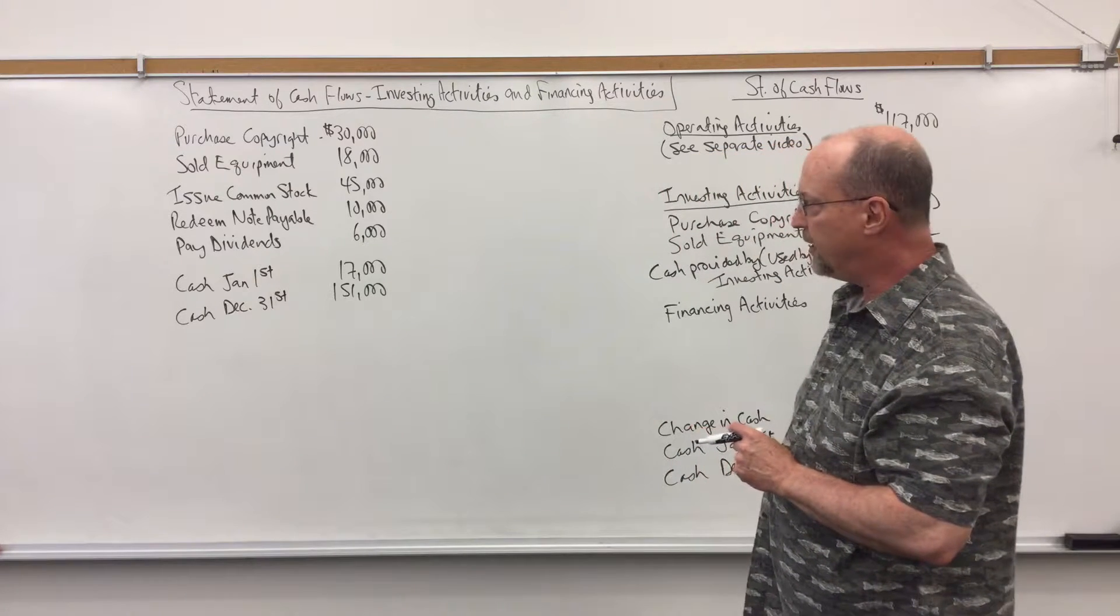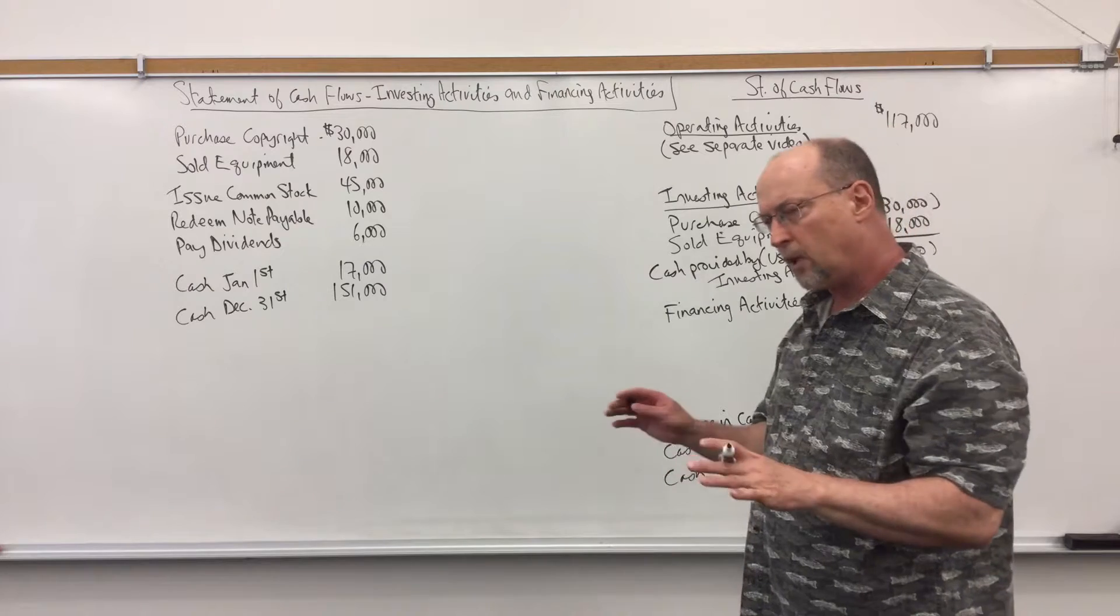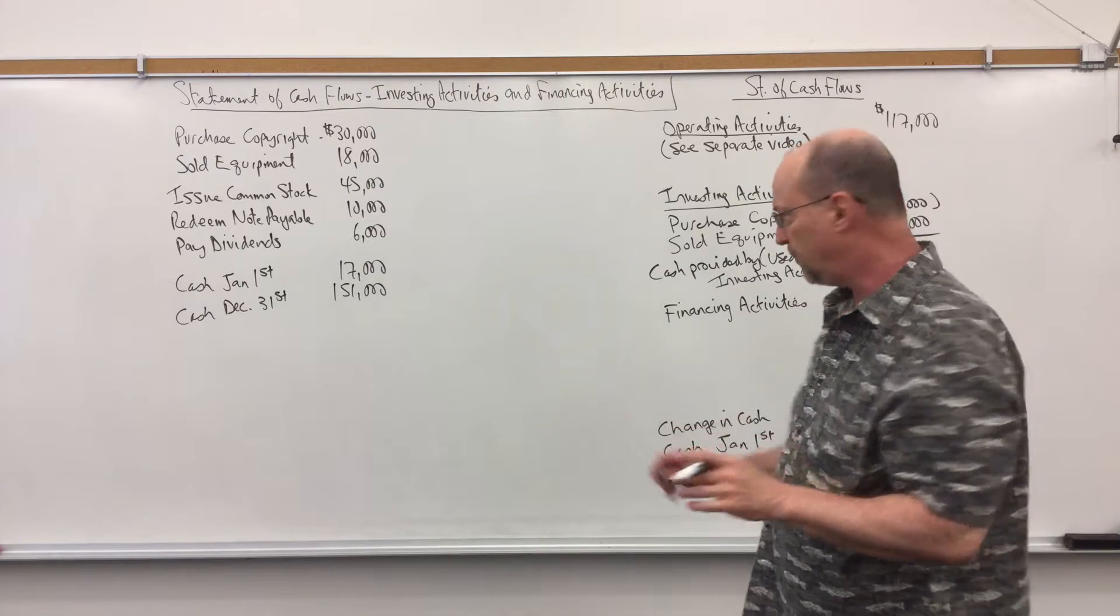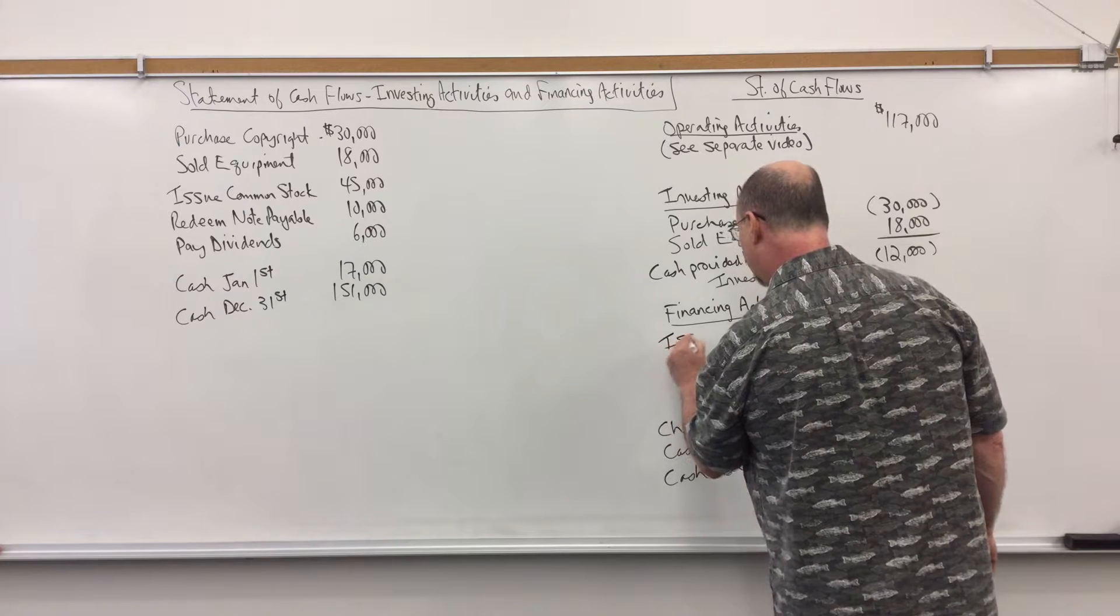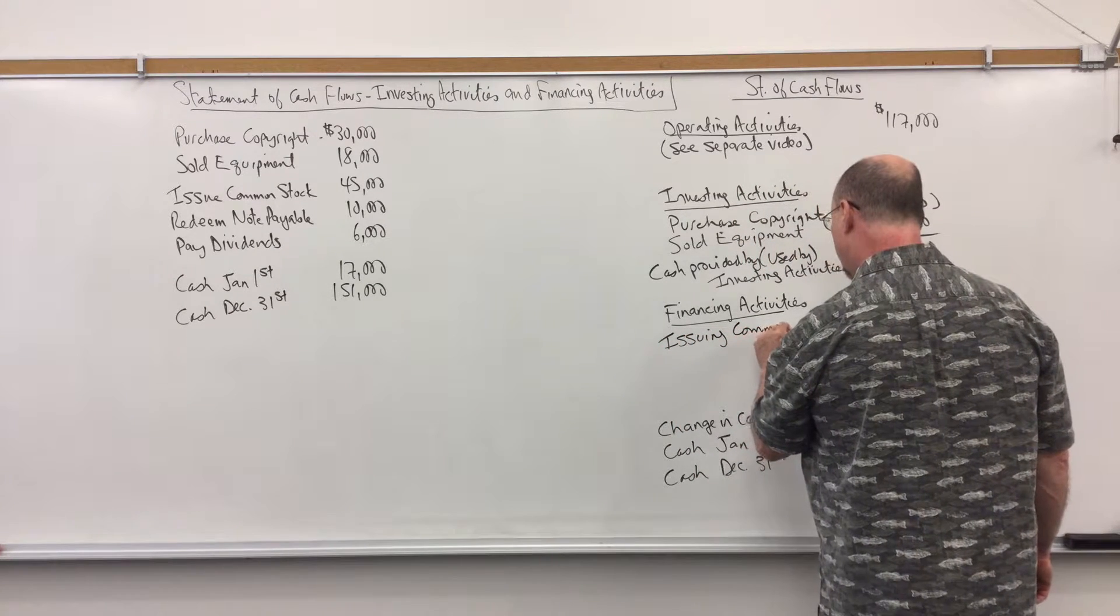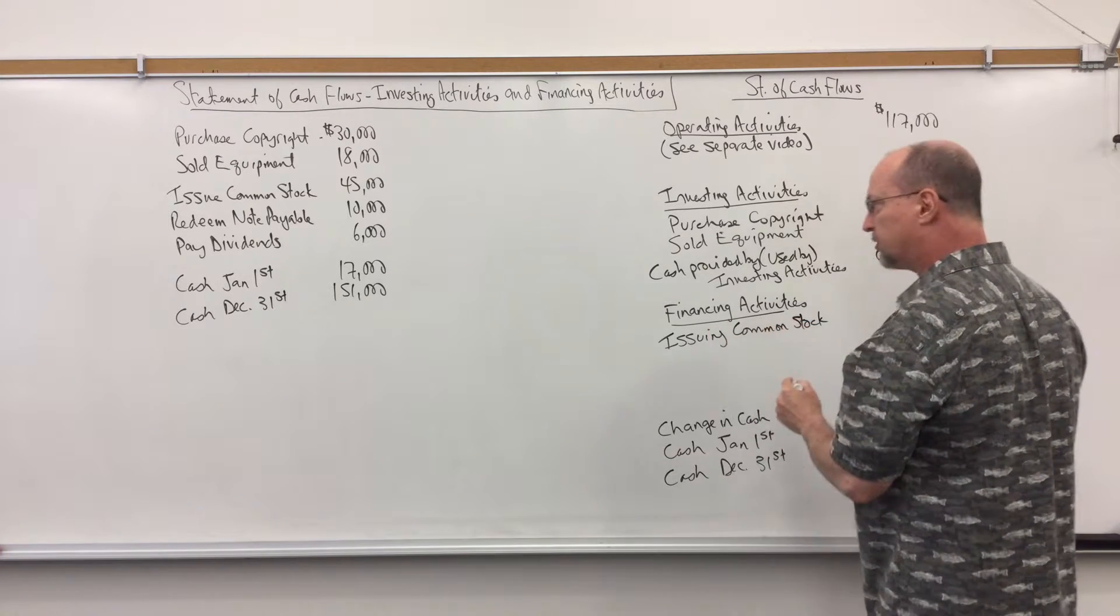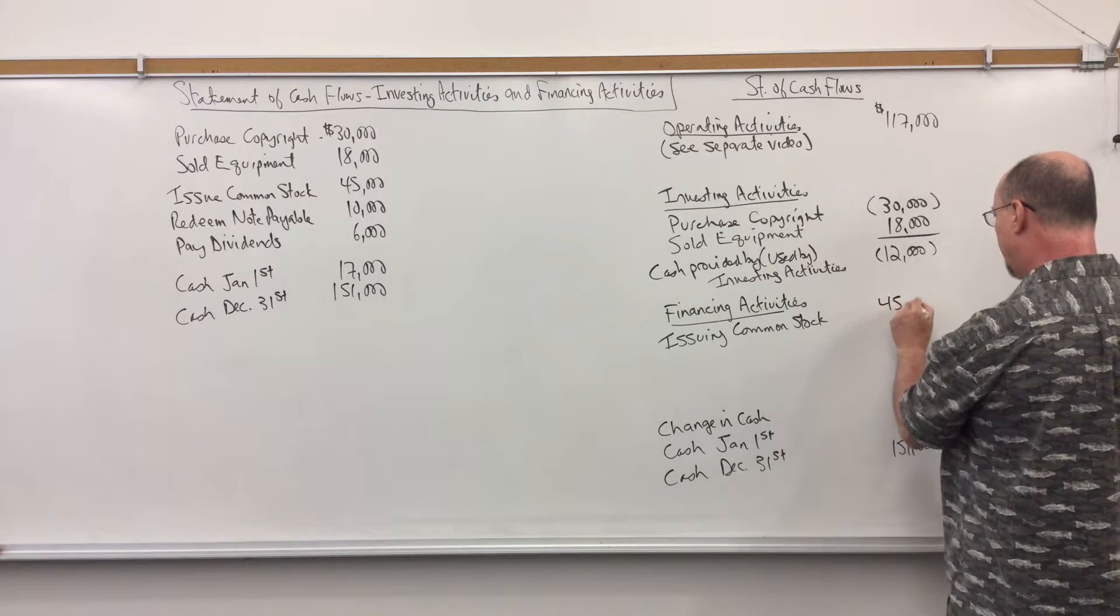In our example we see that we issued common stock for $45,000 and we don't have to worry about par value in this simple example. So issuing common stock or I would say issued common stock that is a receipt of cash $45,000.